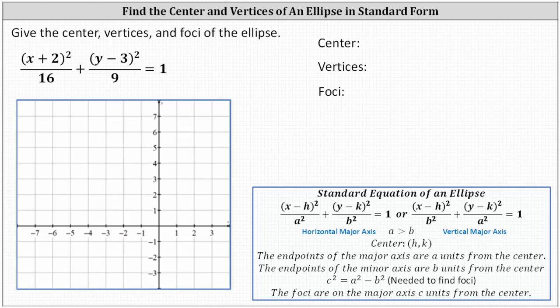Next, a squared is the larger denominator. In this case, a squared is equal to 16, which indicates a is equal to four, since four squared is equal to 16. And b squared is equal to nine, which indicates b is equal to three.